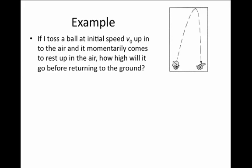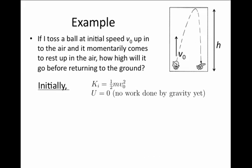Let's take an example. Suppose I toss a ball with initial speed V0 up into the air. It will go up into the air by a distance of h and momentarily stop, and then it will come back down to the ground. Initially, the ball, as it leaves my hand, has a kinetic energy, one half m V0 squared. And initially, it will not have any potential energy, because gravity will not have done any work yet on the ball.